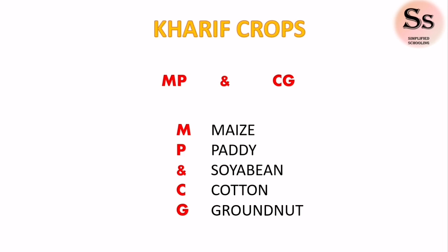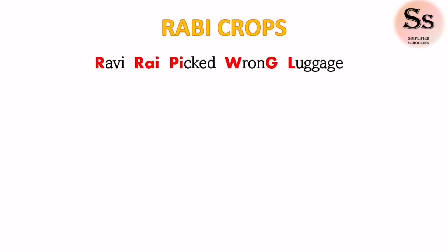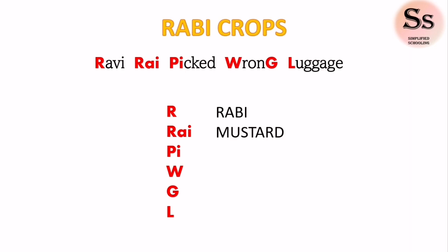Now let's move on to the examples of rabi crops. You can remember the mnemonic: Ravi rai picked wrong luggage. Here R of rabi stands for rabi crops itself, rai means mustard in Hindi, P stands for pea, W stands for wheat, G stands for gram, and L stands for linseed.